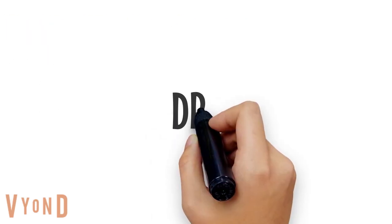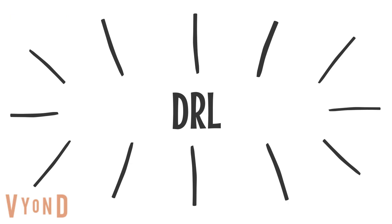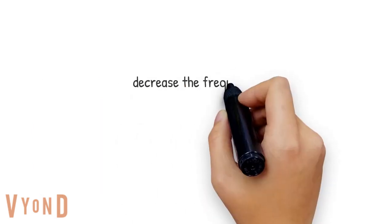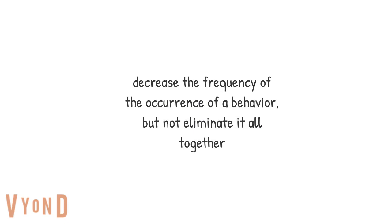The next type of differential reinforcement is DRL — differential reinforcement of low rates of responding, or low rates of behavior. This is used to decrease the frequency of a behavior but not completely eliminate it. You can reinforce a learner for fewer occurrences of blurting out, particularly if the behavior is reduced by 50% but not completely to zero — you would still reinforce them for that 50% reduction.